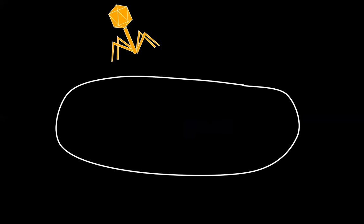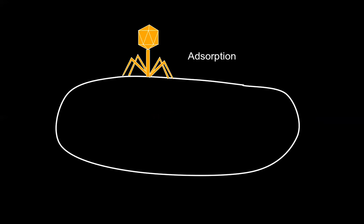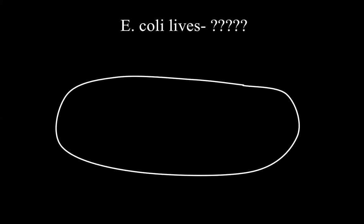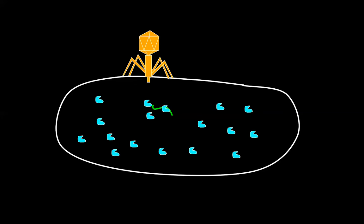The surprise was this: sometimes the bacterial phage would adsorb to the outside of the bacterial cell and inject its genetic information, but instead of viral replication happening inside the cell, the cell survived. There was no making of viral proteins or copying of viral DNA. Instead, the viral DNA was digested or cut into smaller pieces. Some of the bacteria cells contained enzymes that were able to bind to the viral DNA and break it into smaller pieces. These enzymes were called restriction enzymes because they restricted the virus from reproducing.